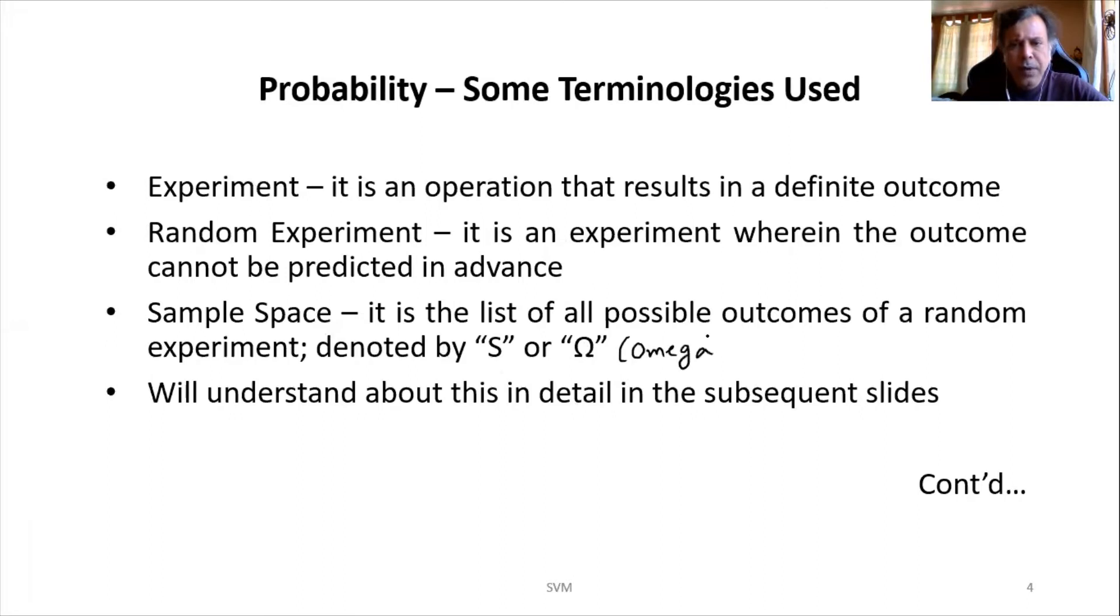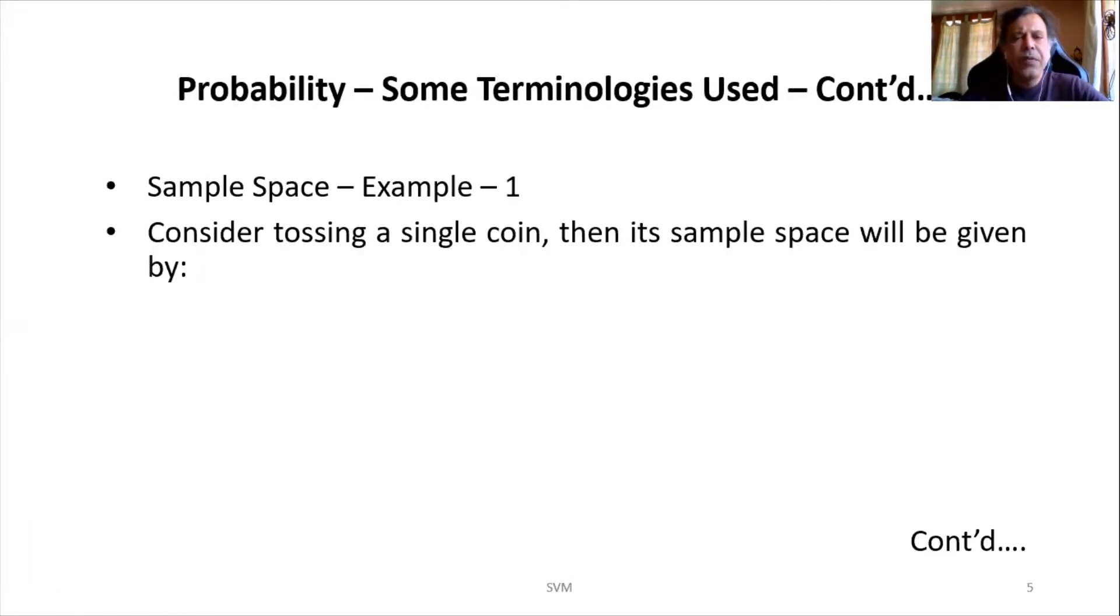But for our convenience, we will proceed with capital S only. So if a single coin is tossed, then our sample space will be S equal to, as we spoke about, either it can be a head or it can be a tail.